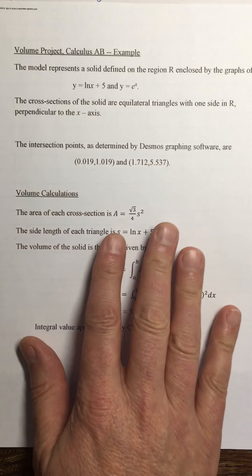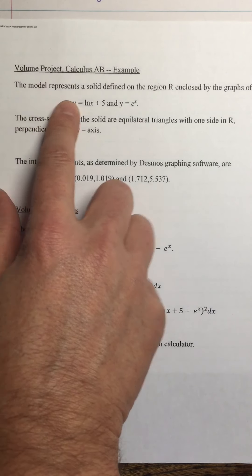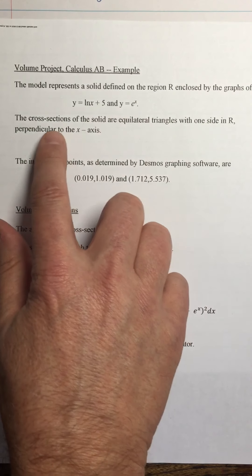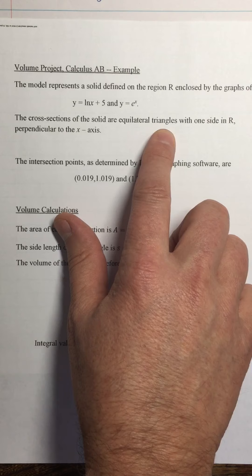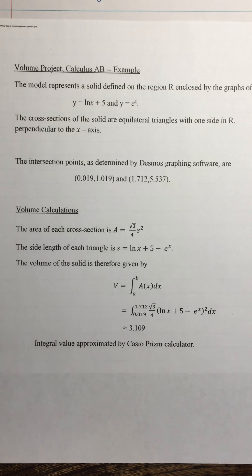I decided that the cross-sections of the solid - this is the things you need to write - you need to say what the region is, you need to say what the cross-sections are. I'm going to use equilateral triangles and you're going to see why I like equilateral triangles - because they're easy to make.